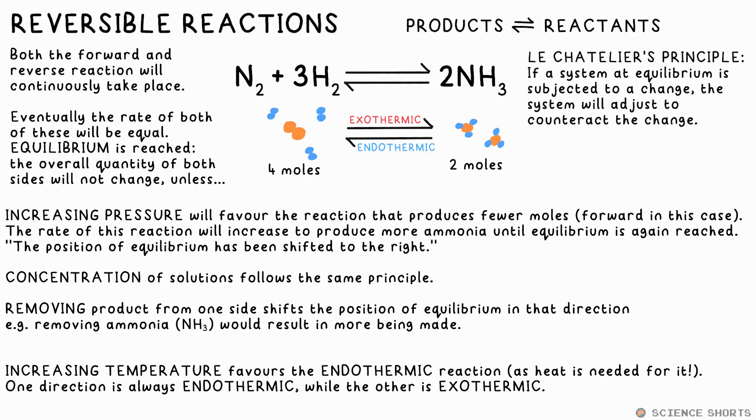I mean, that makes sense, doesn't it? An endothermic reaction requires net energy being put in, so a higher temperature provides that. A colder temperature will favor the exothermic reaction. In this case, that's the forward reaction.